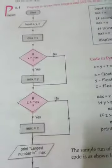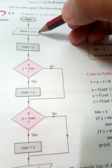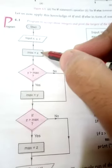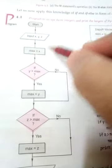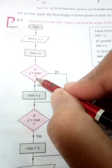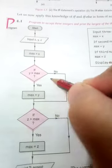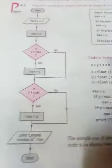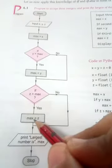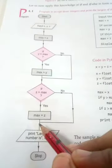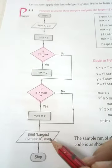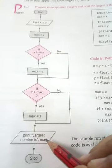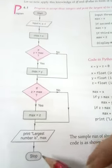Look at the flowchart. Start, input X, Y, Z. We store X into max. Then there is a condition: if Y greater than max, store Y into max; otherwise go to the next condition. Check if Z greater than max; if yes, store Z into max; otherwise go to the next statement. Print 'the largest number is max' — this can be X, Y, or Z. End with the stop statement.